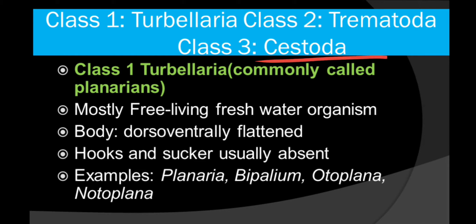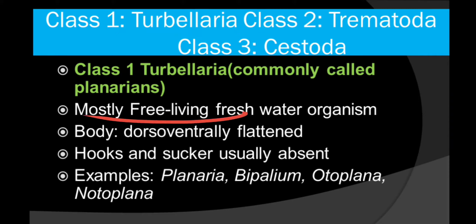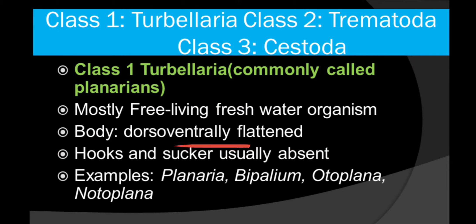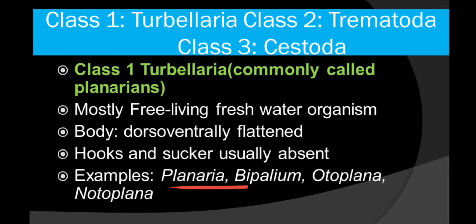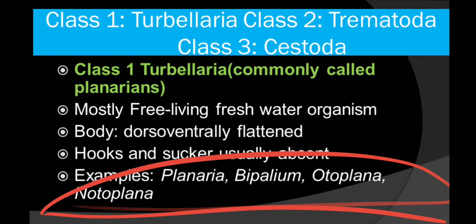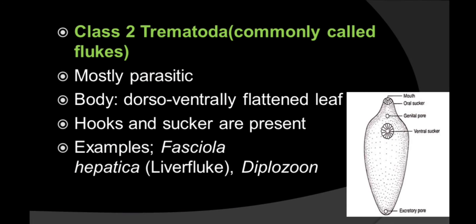The classes of this phylum are three: Turbellaria, Trematoda, and Cestoda. Turbellaria are commonly called Planarians, Trematoda are commonly called flukes, and Cestoda are commonly called tapeworms. Turbellarians, also known as Planarians, are mostly free-living freshwater organisms. The body is dorsoventrally flattened. Hooks and suckers are usually absent in this class. Examples are Planaria, Bipalium, Cotoplana, and Notoplana.